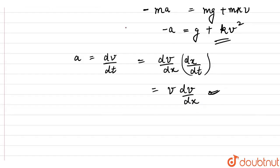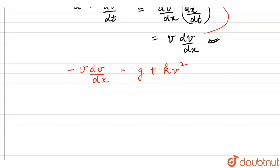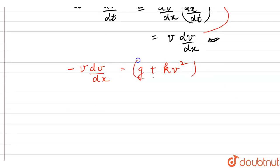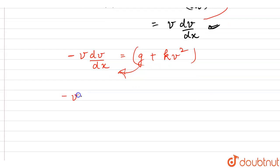Let's put this expression. We get minus v dv over dx equals g plus kv squared. This is an expression in velocity. Let's take it to the denominator. We get minus v divided by g plus kv squared dv. This equals dx.